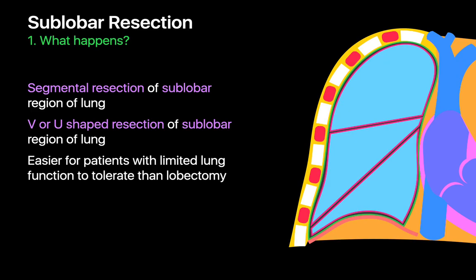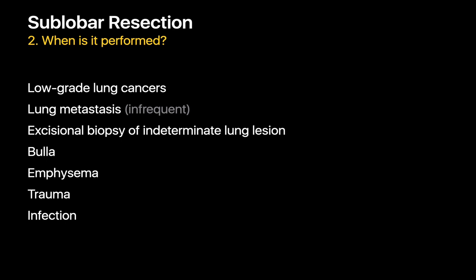Sublobar lung resections such as segmentectomy or wedge resection are better tolerated by patients with compromised lung function compared to pneumonectomies and lobectomies. They tend to be reserved for low-grade lung cancers, as they may not provide much survival benefit for many higher-grade cancers. Occasionally, a wedge resection is performed for a lung metastasis — a metastasectomy — in patients whose malignancy appears to have spread only to the lung. Sublobar resections may also be used to resect bullae or emphysematous lung to improve respiratory function in severe COPD, for chronic infections like mycetomas, and in cases of severe traumatic lung damage.